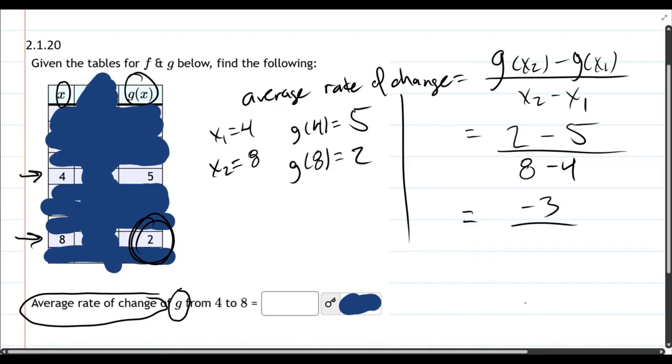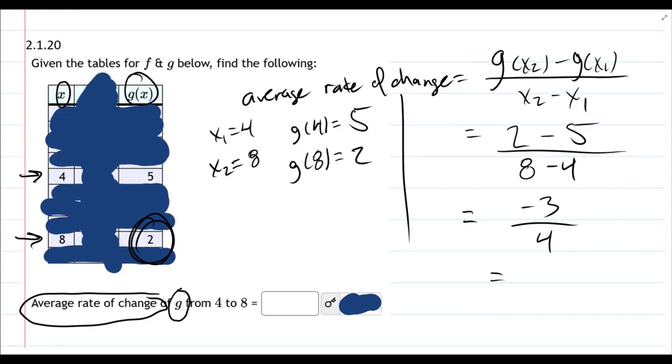2 minus 5 is negative 3. 8 minus 4 is 4, and I'm just going to leave it as 3/4. You don't need to turn this into a decimal—negative 3/4, not positive 3/4.